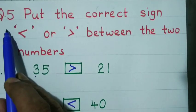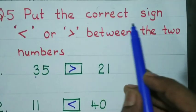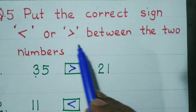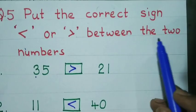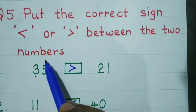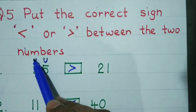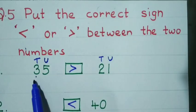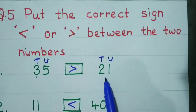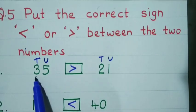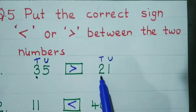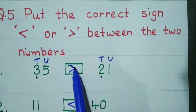Question number 5: Put the correct sign — smaller than or greater than — between the two numbers. Whenever numbers are given, write the places. You need tens. Both numbers are two-digit numbers. In the tens place, 3 is there for 35 and 2 for 21. That means 35 is greater than 21.